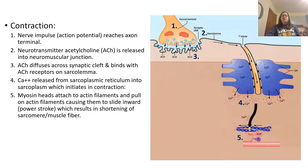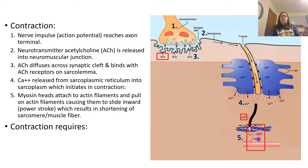Calcium binding to troponin and tropomyosin exposes the binding sites so the myosin heads can connect, pull, and perform their power stroke, causing the sarcomere to shorten and the sliding to take place. A contraction requires acetylcholine to start the process, but calcium and ATP must also be present. Acetylcholine is the neurotransmitter that initiates the whole process, but calcium and ATP must both be present for a contraction to take place.